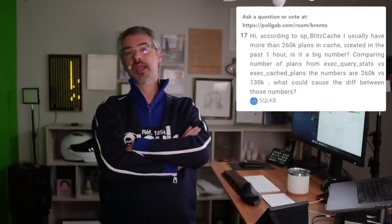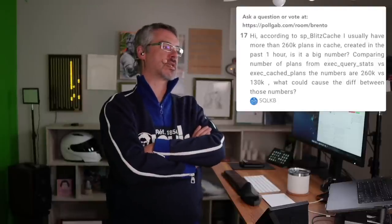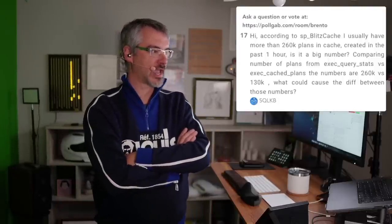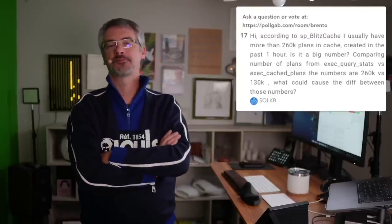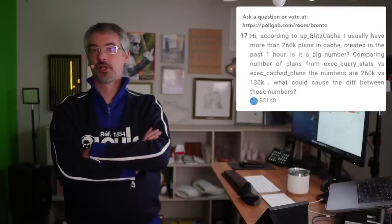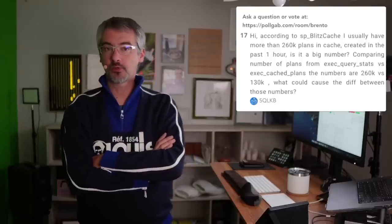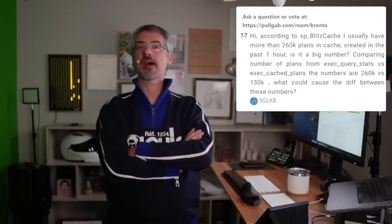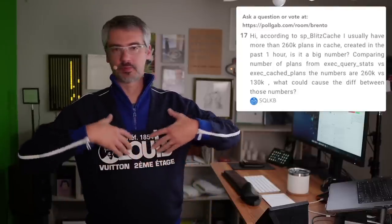Starting with the number one most highly upvoted question from SQLKB — and SQLKB, you shouldn't feel bad. It's not that you're bad, it's just that your question is bad. SQLKB says, according to SPBlitzCache, I usually have more than 260,000 plans in the cache created in the last hour. Is it a big number? Well, SQLKB, the reason why you're asking that is SPBlitzCache told you it was a big number. SPBlitzCache only warns you about this stuff when we say, hey, you have a high number of cached plans that are single use, that have been repeatedly regenerated because somebody's using unparametrized SQL.